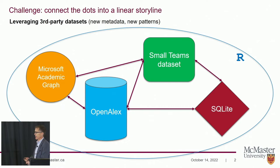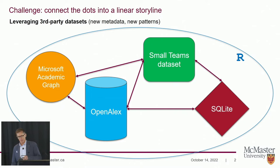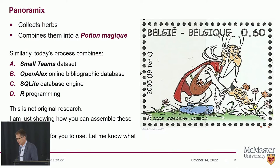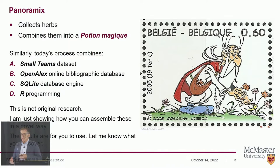Today I'm talking about a range of data sources and applications you can use. It's going to look like a bit of a smorgasbord, a bit of a buffet, and that's the intention — because at the very end I'm going to show you how you can stick them all together and get something out of it. It'll look disorganized, but it all comes together at the end. In a sense, I am doing the role of Panoramix — known in English as Getafix from the Asterix cartoons. He goes around collecting herbs that he'll later put together in a big pot to make a magic potion. That's what we're doing here: I'm talking about OpenAlex, R, SQLite, and small teams, and I'm going to put it all together in a big pot at the end.